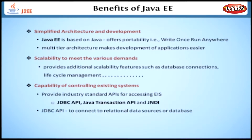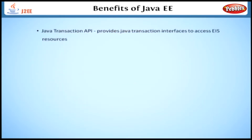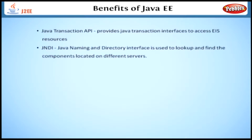JDBC API is used to connect to relational data sources or a database. Java Transaction API provides Java transaction interfaces to access EIS resources. JNDI, or Java Naming and Directory Interface, is used to look up and find locations of components located on different servers.